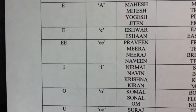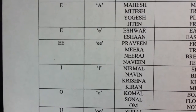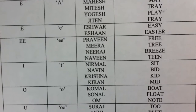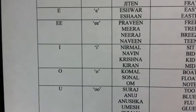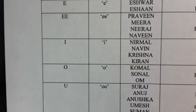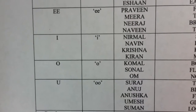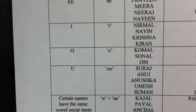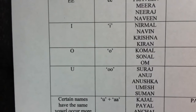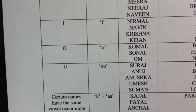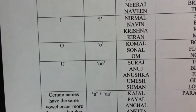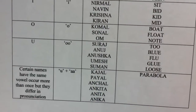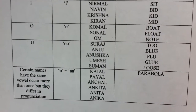I, when it appears in an Indian name, is pronounced the way it is conventionally pronounced as 'ih', like in Nirmal, Naveen, Krishna, Kiran, etc., and like in the words Sit, Bid, Kid, Mid, etc. O is pronounced conventionally, like in Komal, Sonal, Om, etc., and like in the words Boat, Float, Note, etc. U is pronounced as 'oo', like in the names Suraj, Anuj, Anushka, Umesh, Suman, etc. And words for reference would be To, Blue, Flu, Glue, Blues, etc.